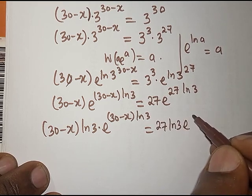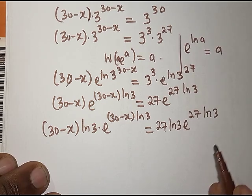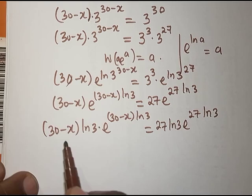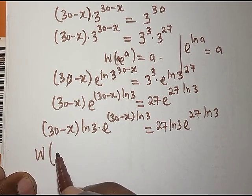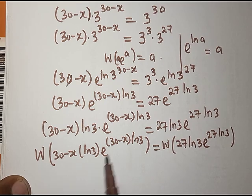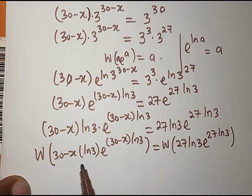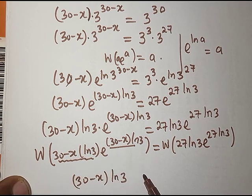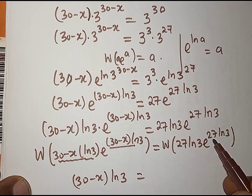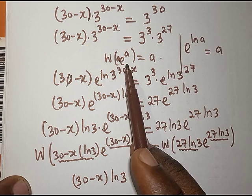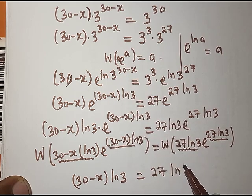The right-hand side becomes 27 ln 3 · e^(27 ln 3). Now both sides are in the Lambert W form. Applying the Lambert W function: the left-hand side is W of [a · e^a] with a = (30 − x) ln 3, and the right matches 27 ln 3 · e^(27 ln 3), so W gives us 27 ln 3.